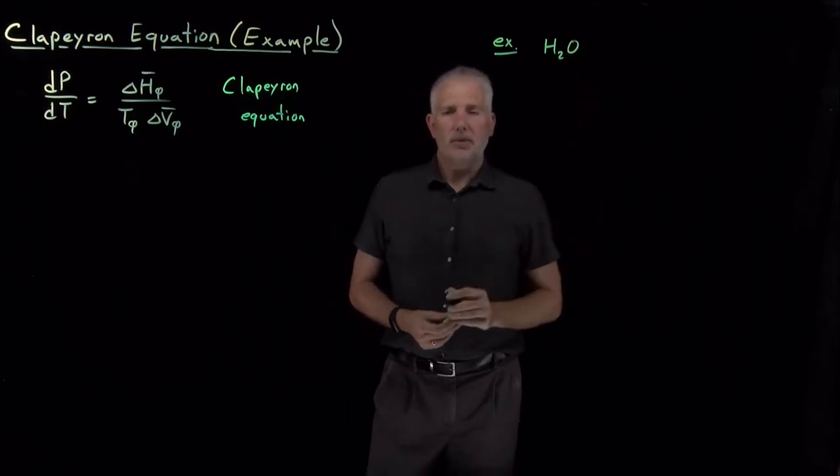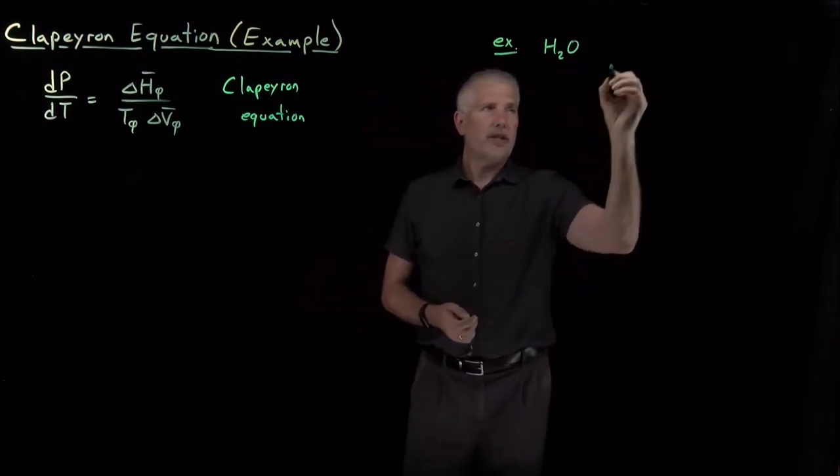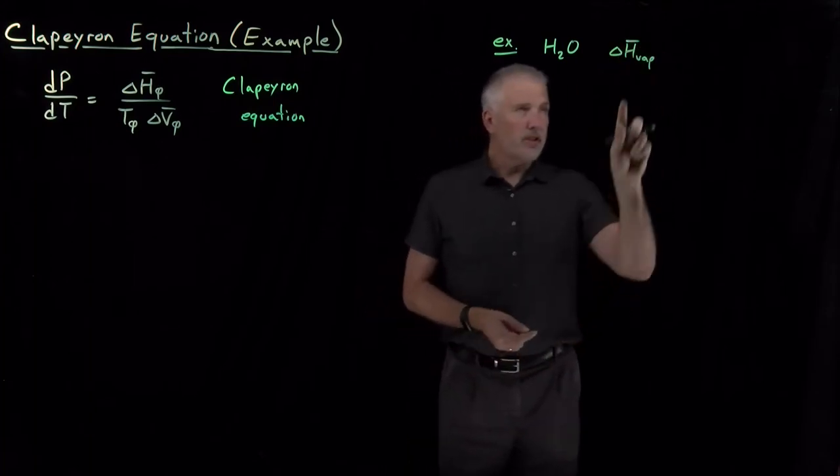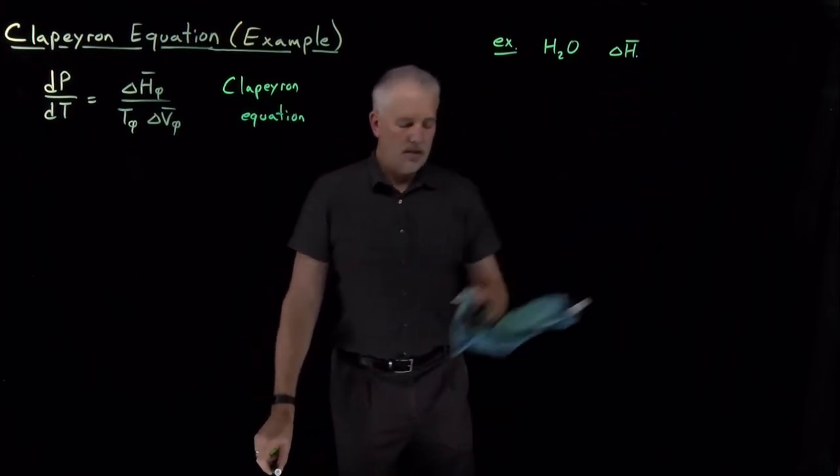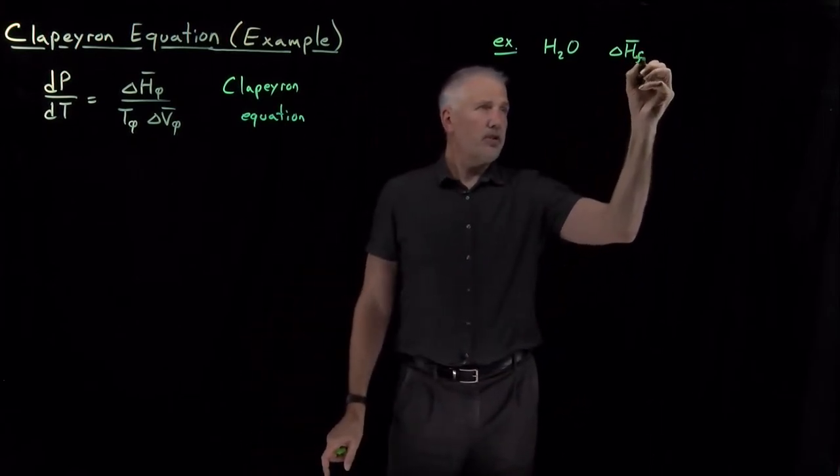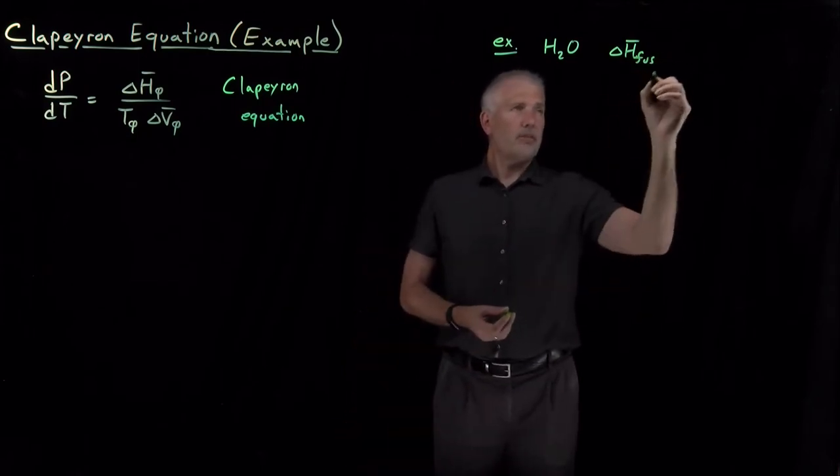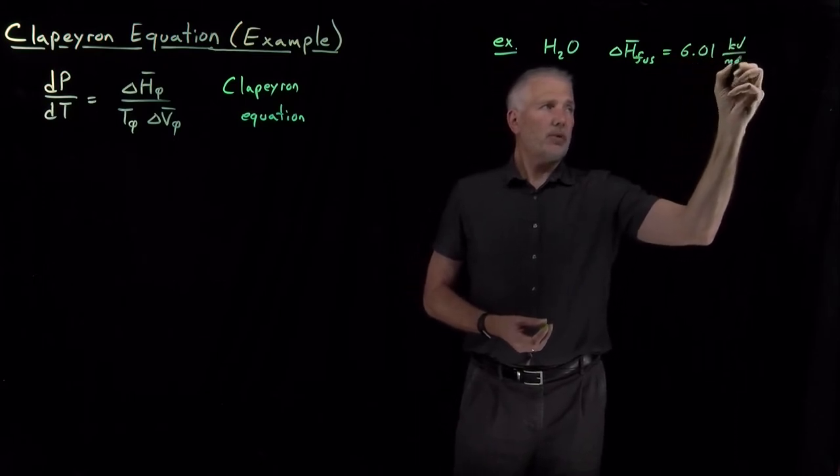We'll take a substance that we're fairly familiar with, water. So if I tell you that the molar enthalpy of fusion, when I melt solid water to make it liquid, is six kilojoules per mole.